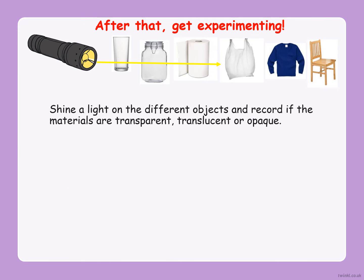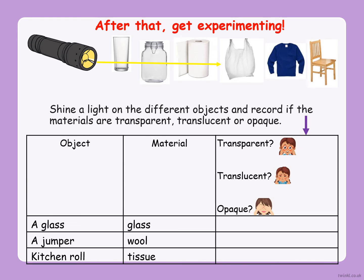Now it's time to get experimenting. You have to use a torch — and if you do not have a torch in your home, you can use the torch on your phone. You are going to shine a light on the different objects: pick up one of your objects, shine the light on it, and see whether the light goes through it or not. You are going to take turns selecting your objects and shining the light on each one. Record in your third column whether the object is transparent, translucent, or opaque.